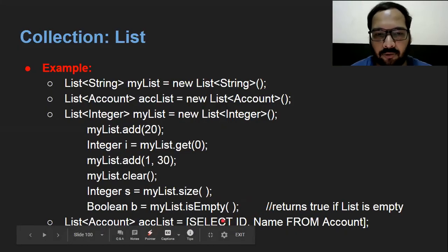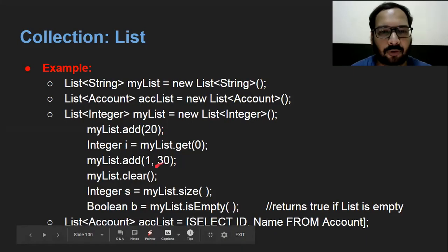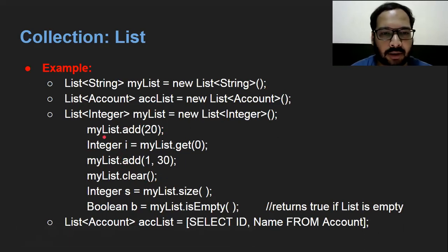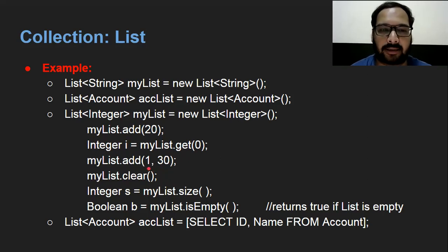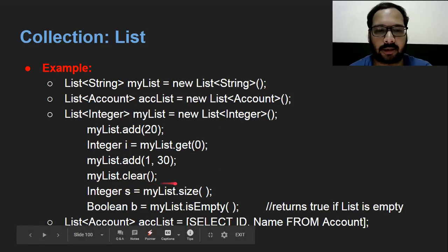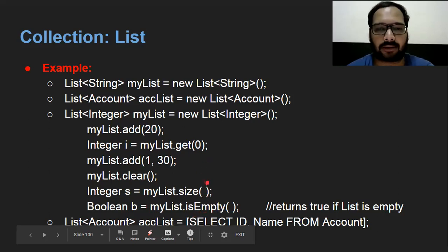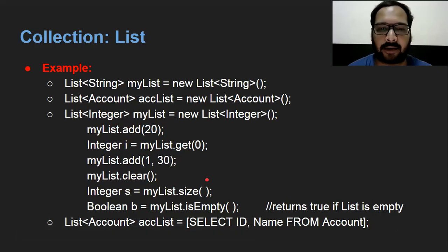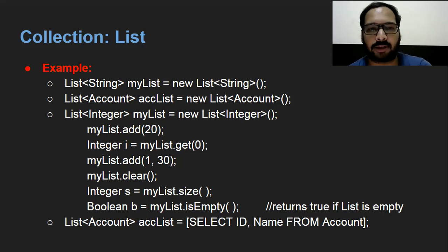Before the SOQL query demo, focus on these list methods as well. myList.add() we already discussed. get(index) retrieves a value at a specific index. add(index, value) inserts a value at a particular location. clear() clears the list. size() returns the size of the list. isEmpty() checks whether the list is empty. These methods will be explained in detail in the dedicated list video.